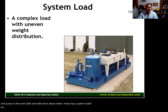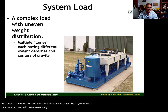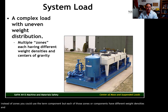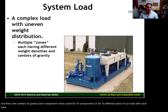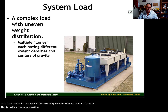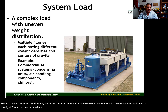A system load is a complex load with an uneven weight distribution. There are multiple zones or components, and each of those components have different weight densities and their own centers of gravity. Each component — there could be ten different parts of our load — each with its own unique center of mass, center of gravity. This is really a common situation, maybe more common than anything else we've talked about in the video series. And over to the right there is an example which I'll talk about here in a second.